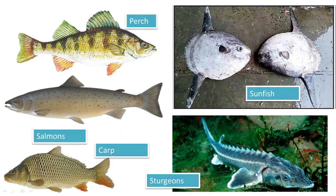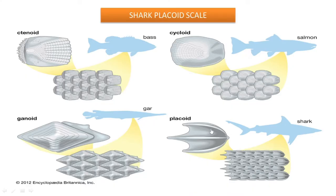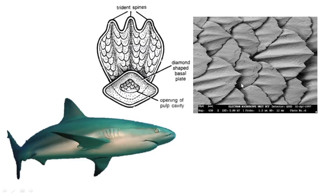Sturgeons are an ideal example of a fish having ganoid scales. Now, coming to the scale we are going to study today — the placoid scale. Its arrangement is also in an overlapping pattern. Here we can see a picture of a single scale, which shows spines as a common feature of the placoid scale.